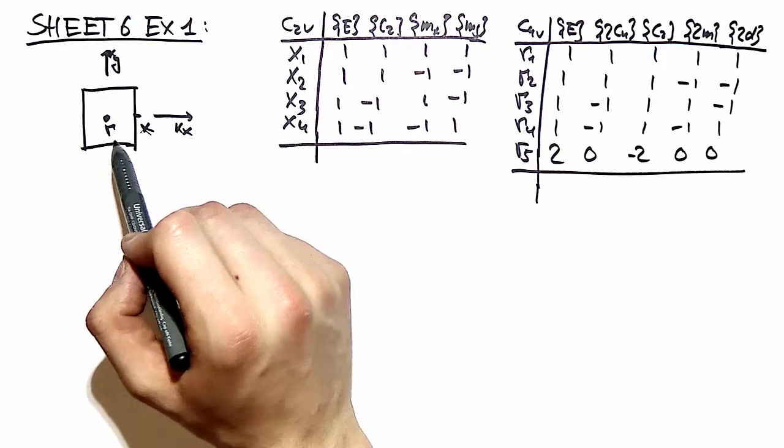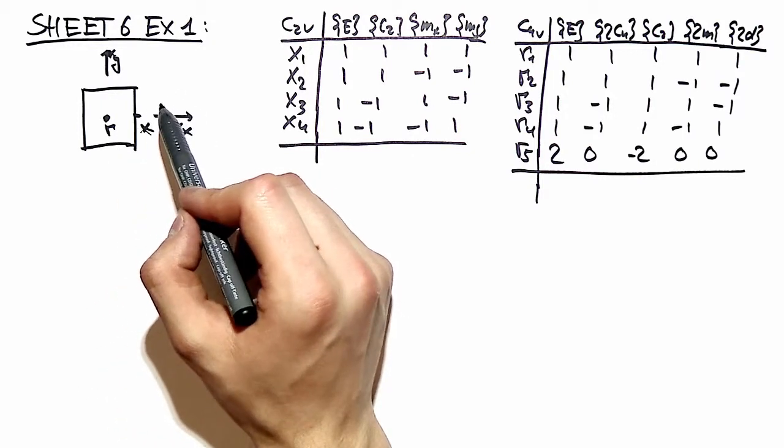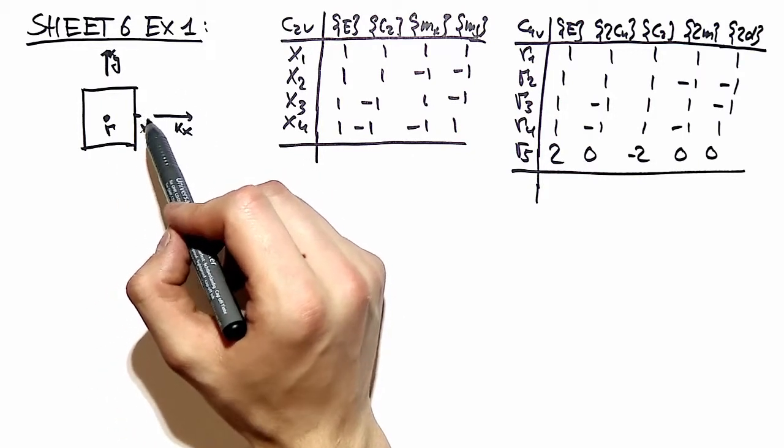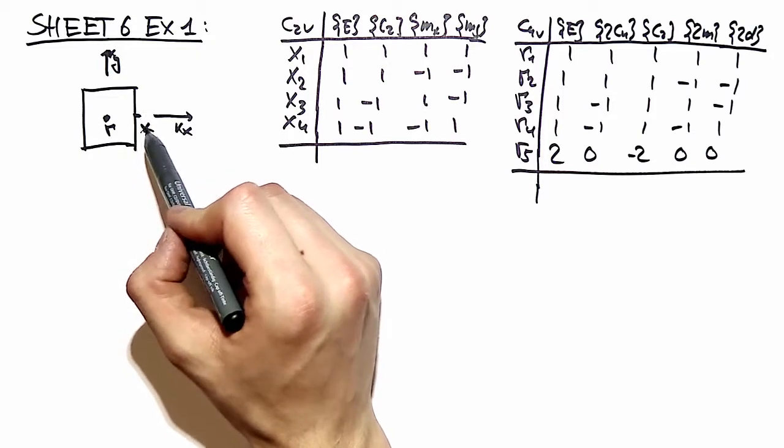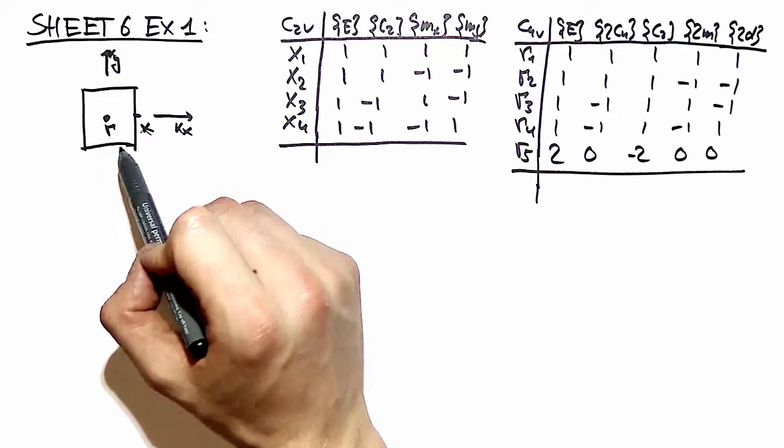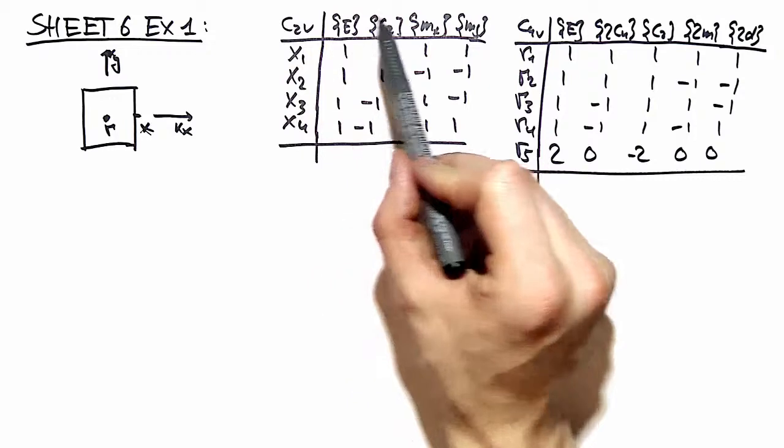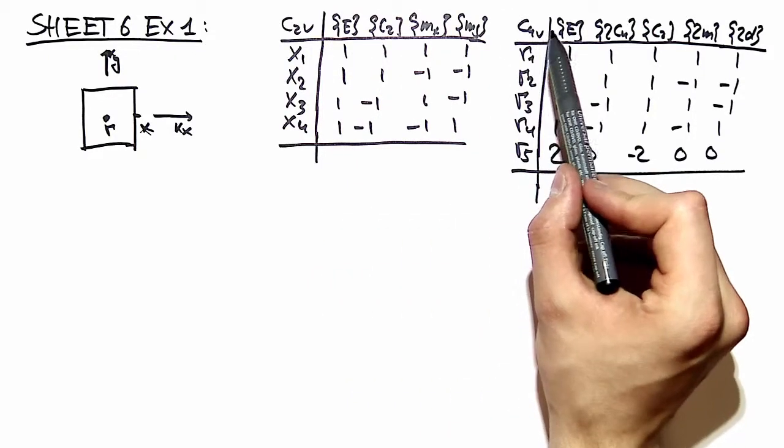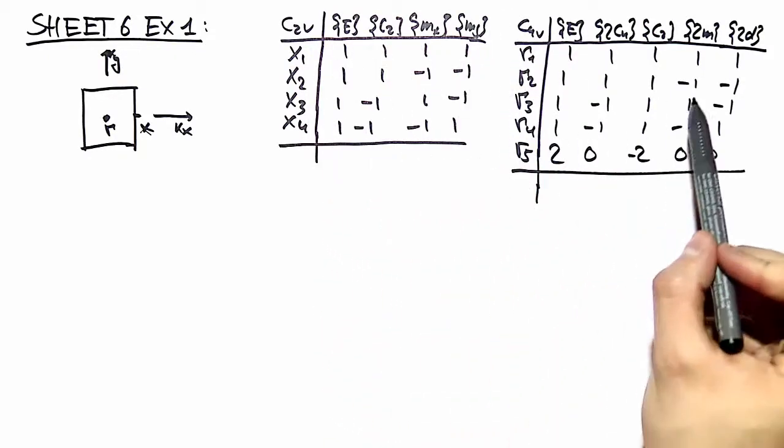As you should note already, the little group, the point group corresponding to the little group of our distinct points over here named the x point and the gamma point, is C2v and C4v, and I already noted the character table of these two point groups.